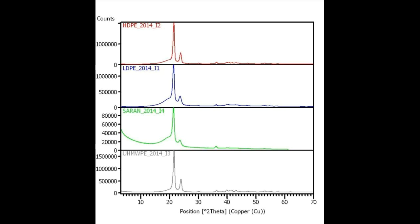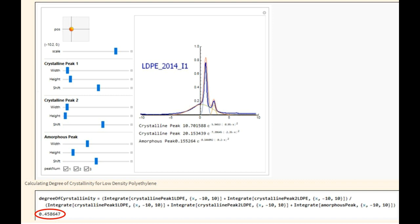The expected value for degree of crystallinity for low-density polyethylene is 44% to 51% crystallinity. The value obtained using Mathematica peak fitting was 46% crystallinity, so this is within the accepted range.